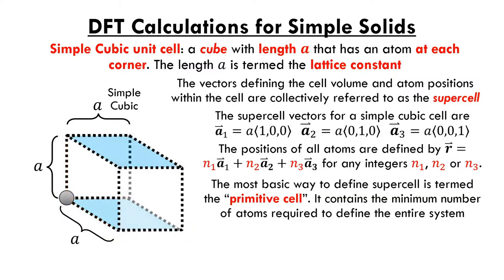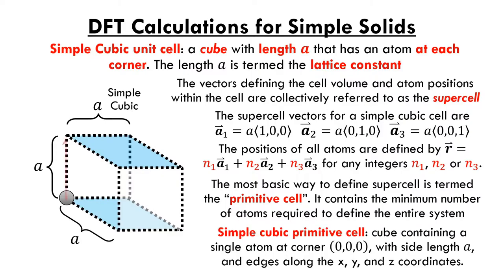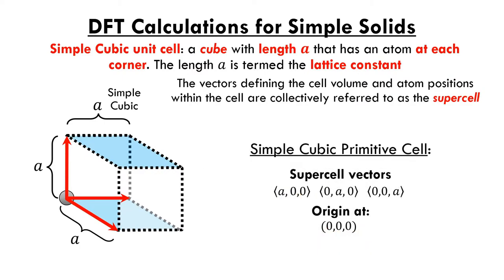The most basic way to define a supercell is called the primitive cell. The primitive cell contains the minimum possible number of atoms and minimum possible supercell vector lengths required to describe the repeating pattern of the entire crystal. With a simple cubic structure, the primitive cell contains just one atom, placed at the corner of the cube at the origin. The primitive cell can be completely described by an atom at the origin and the three supercell vectors (A,0,0), (0,A,0), and (0,0,A).